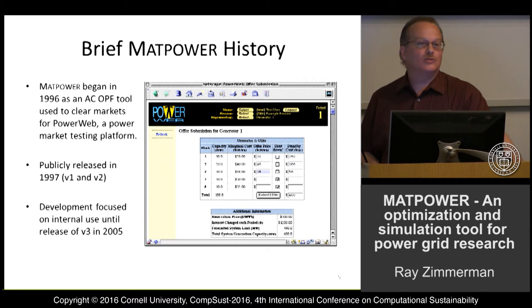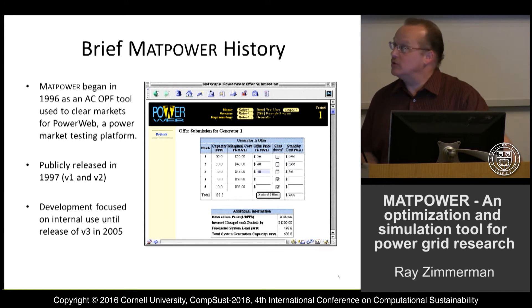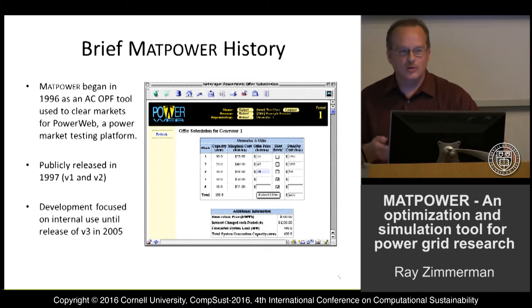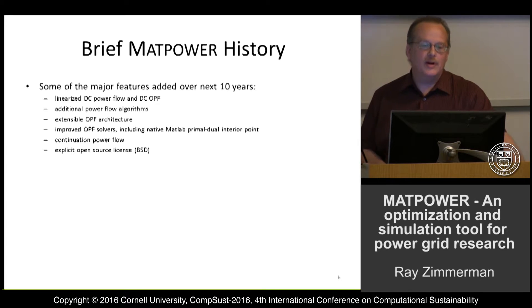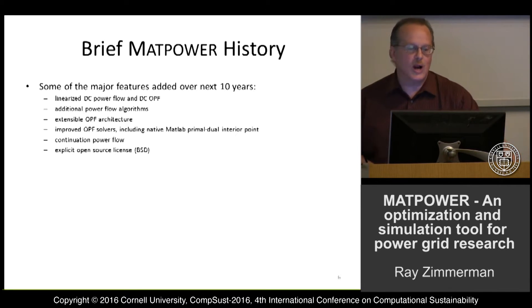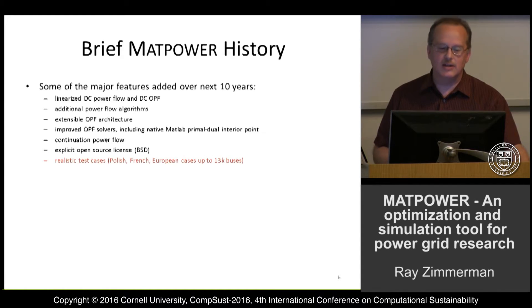MAP Power began about 20 years ago as the underlying AC Optimal Power Flow tool used to clear markets for PowerWeb, which was a power market testing platform. It was first publicly released in 1997, versions 1 and 2, and then for about eight years development focused on internal improvements for PowerWeb until version 3 was released in 2005. Over the next 10 years, additional features were added and we switched to an explicit open source BSD license.